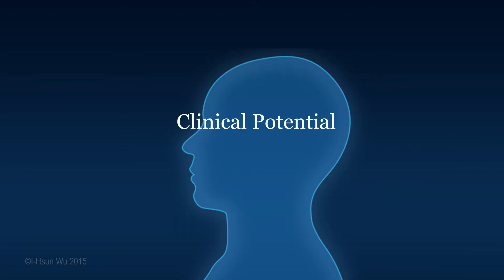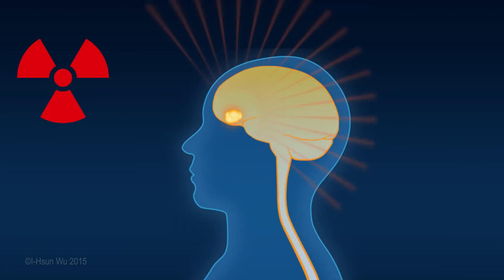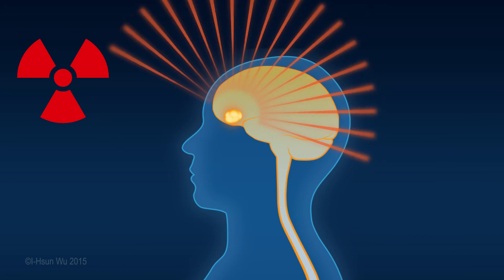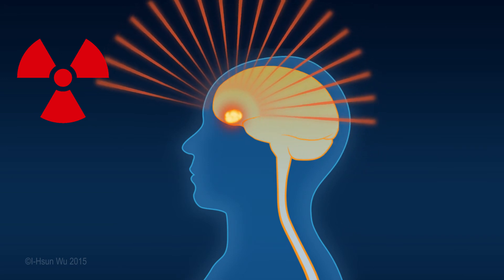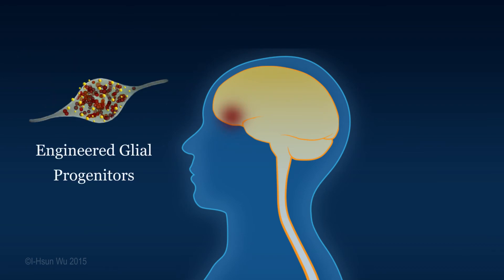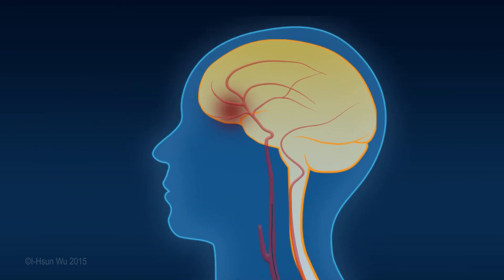Clinical potential: When using radiation therapy to destroy a targeted brain tumor, the brain tissue surrounding the tumor can also be damaged by radiation. The transplantation of engineered glial progenitors is an attractive solution for repairing radiation-induced brain injury. The microcatheter is able to target a brain area via a specific artery network that supplies the area with the radiation-induced brain injury.